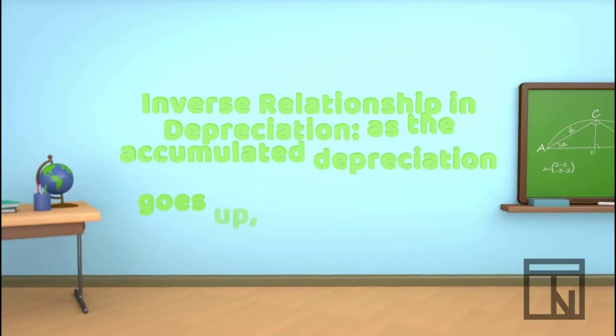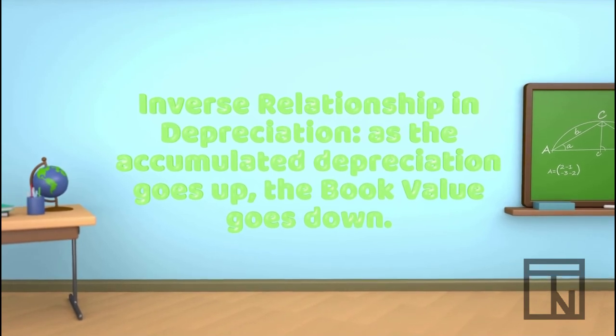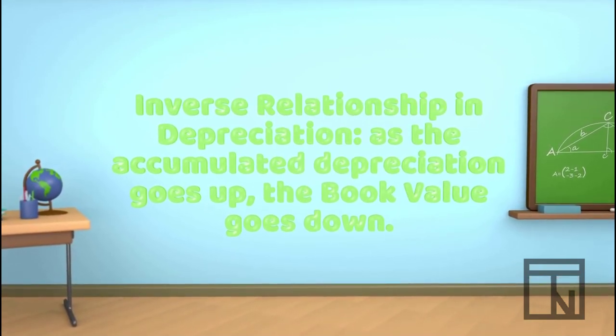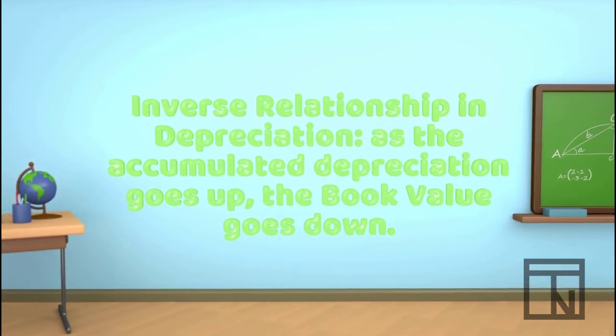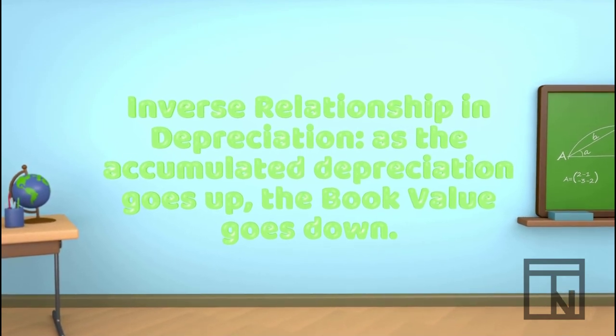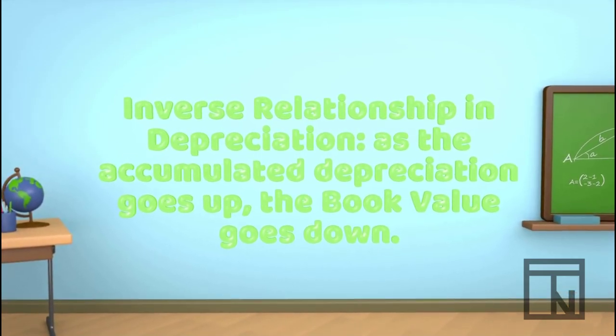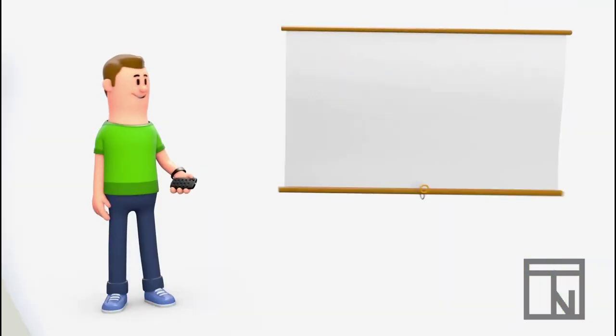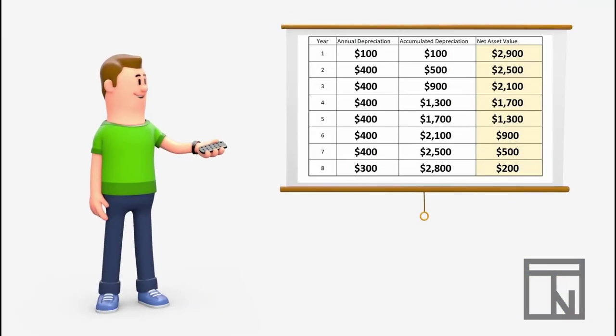So, accumulated depreciation and net value have what's called an inverse relationship. This means that as the accumulated depreciation goes up, the book value goes down. Let's let Bob finish entering his net value for his assets.